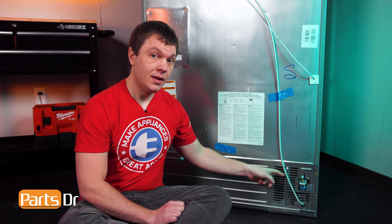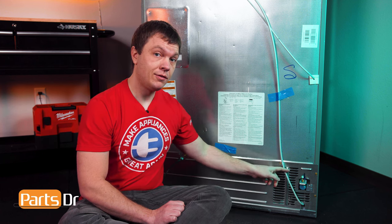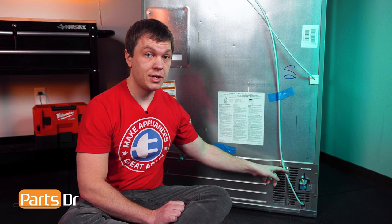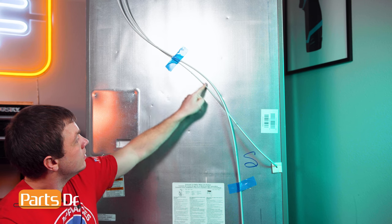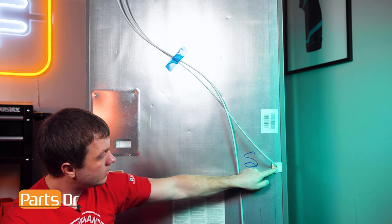The water valve we're replacing in this video is located here. This refrigerator has multiple water valves. This water valve controls water flow from the back of the refrigerator up to the filter housing. From there, the water is distributed to a second water valve that controls water flow to the dispenser and ice makers.